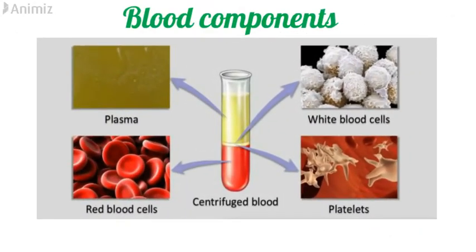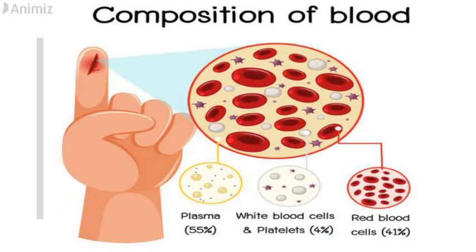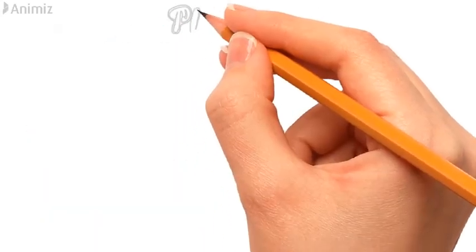Now let's see the different components of blood. If we centrifuge the blood, depending upon their densities, it will be separated into 3 layers. The topmost layer will be a straw colored liquid which is called the plasma. The bottommost layer will be of red blood cells. And between these two layers is a thin layer of white buffy color which is of white blood cells and platelets. 55% of blood is plasma, 41% is red blood cells, and the thin layer of white blood cells and platelets is 4%.